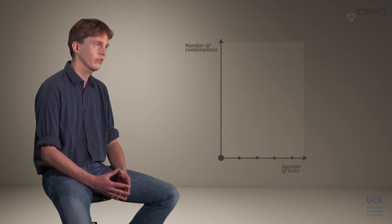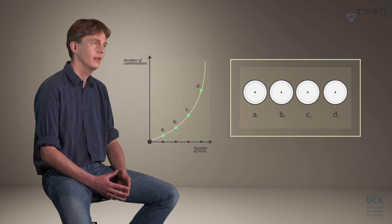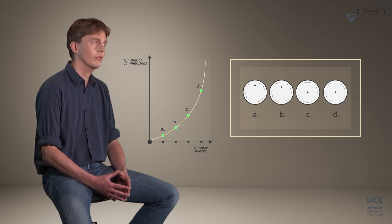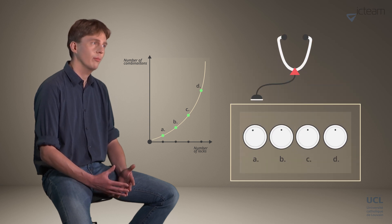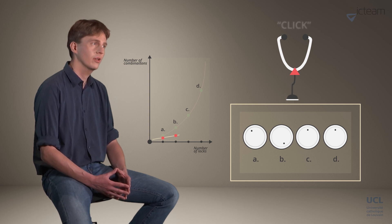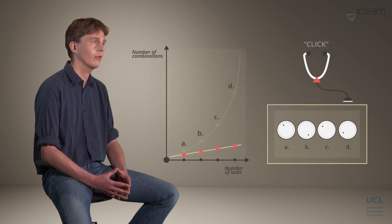In the old days, valuable data was kept secret within safes and protected with locks. Computational security was obtained thanks to a number of combinations that grows exponentially in the number of locks. Yet, clever adversaries found a way to get around this by listening to lock clicks. Taking advantage of this information, the security of the safes is only linear in the number of locks.